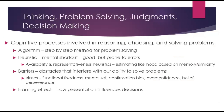Cognitive processes involved in reasoning, choosing, and solving problems — how do we go about that? You have algorithms, which are step-by-step procedures for problem-solving, like math equations. And then we have heuristics, which are mental shortcuts. These are useful, but they can be prone to errors.